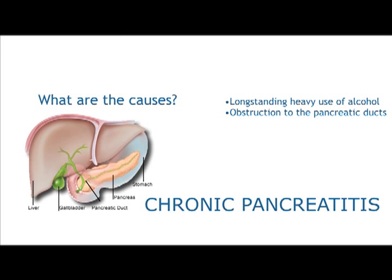In familial pancreatitis, the problem occurs in many members of the family and may start to cause attacks in childhood. A similar form of chronic pancreatitis occurs in tropical countries, often associated with severe malnutrition.